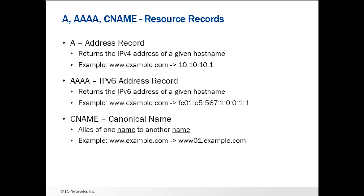Let's do a quick review of what A, Quad A, and CNAME record types are. These were supported in prior versions of GTM, so there's no major changes here other than with the CNAME records. An A or address record returns an IPv4 address of a given host name. Quad A records do the same thing for IPv6, and CNAMEs alias one name to another name.